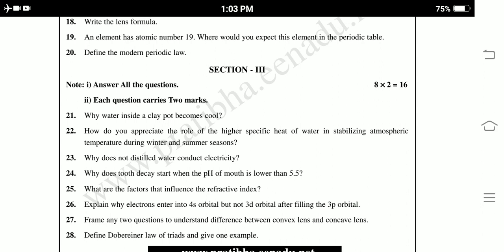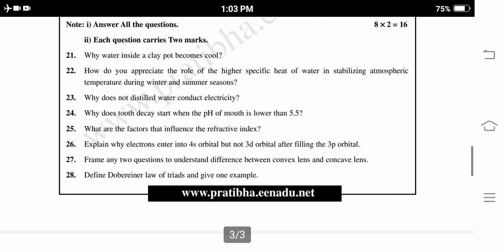Why does tooth decay start when the pH of mouth is lower than 5.5? What are the factors that influence the refractive index? Explain why electrons enter into 4S orbital but not 3D orbital after filling the 3P orbitals. Twenty seven, frame any two questions to understand the difference between the convex lens and concave lens. Define the Dobereiner law of triads and give examples.